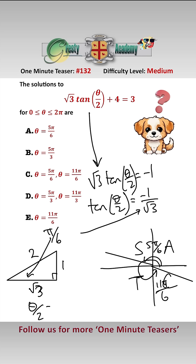So therefore, we have that theta over 2 equals 5 pi over 6 or 11 pi over 6, which means that theta is 5 pi over 3 or 11 pi over 3.